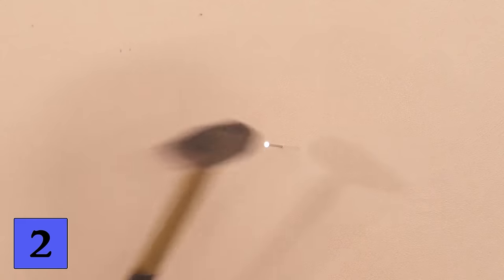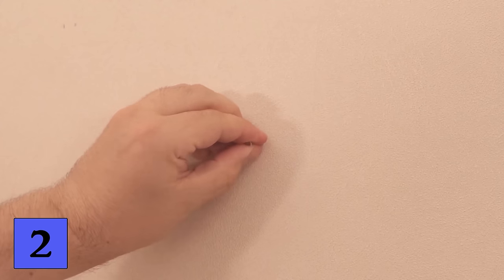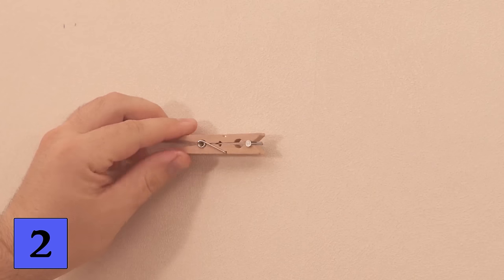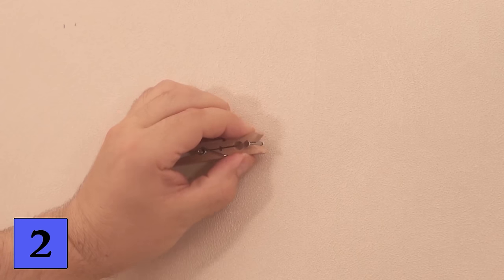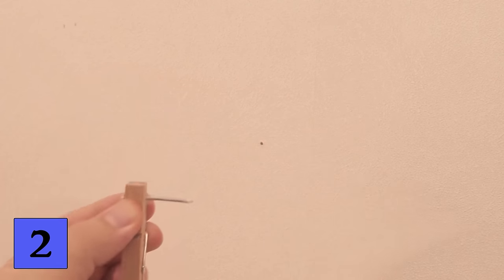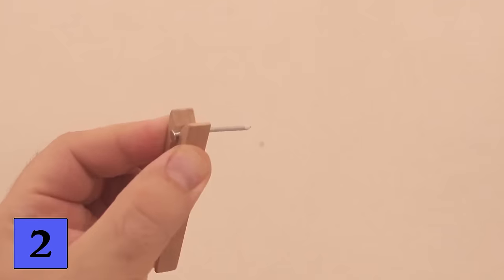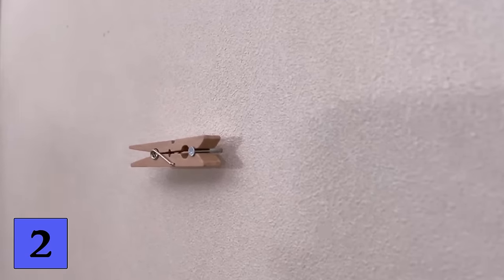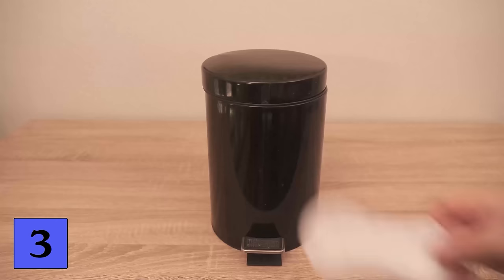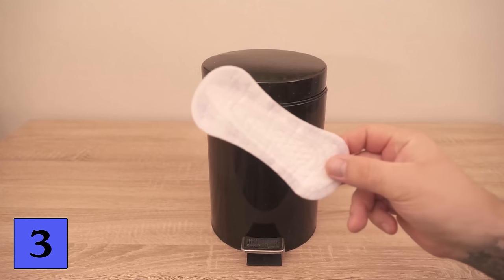Once the nail is a little bit in the wall, you can remove the cloth peg and drive the nail all the way into the wall. But you can even use the cloth peg to remove a nail from the wall again. You put it around the nail again, move everything carefully back and forth, and at some point you can then pull the nail out of the wall. So always have a cloth peg ready the next time you want to drive a nail into the wall.